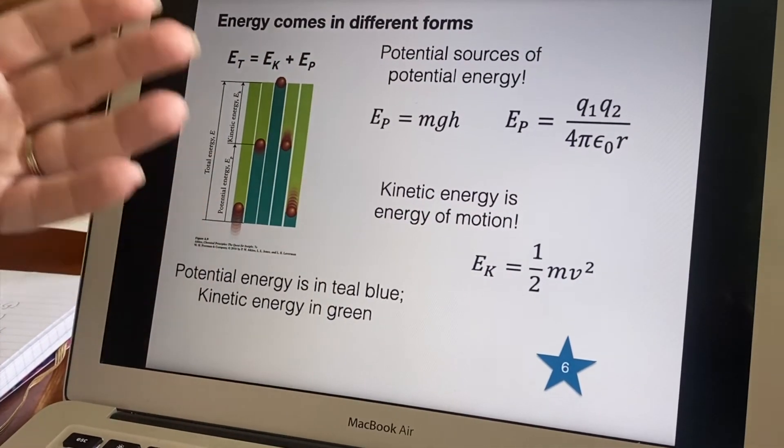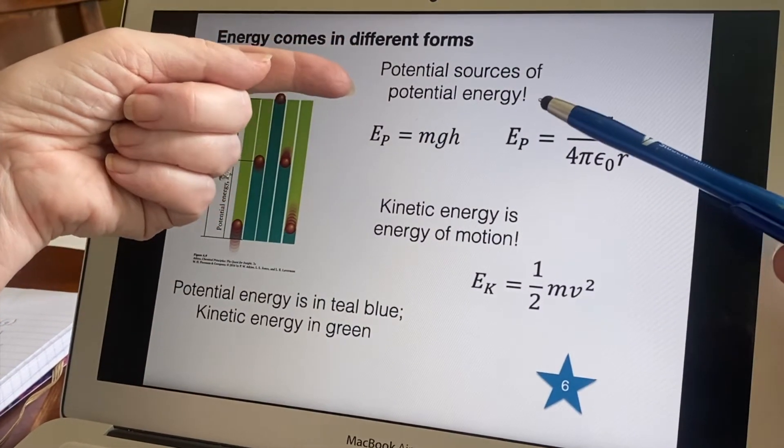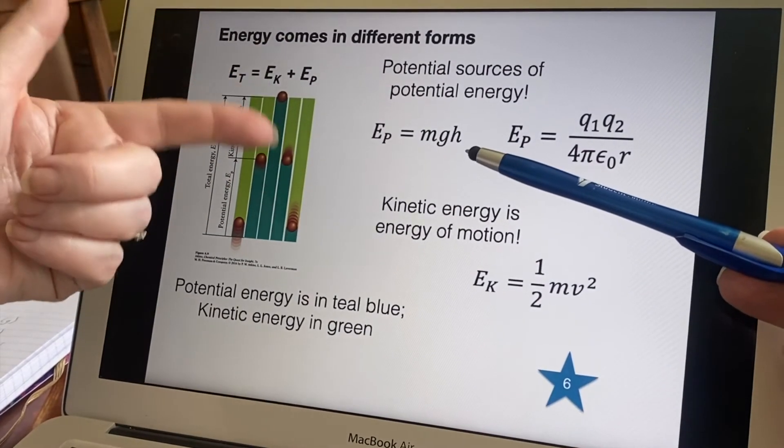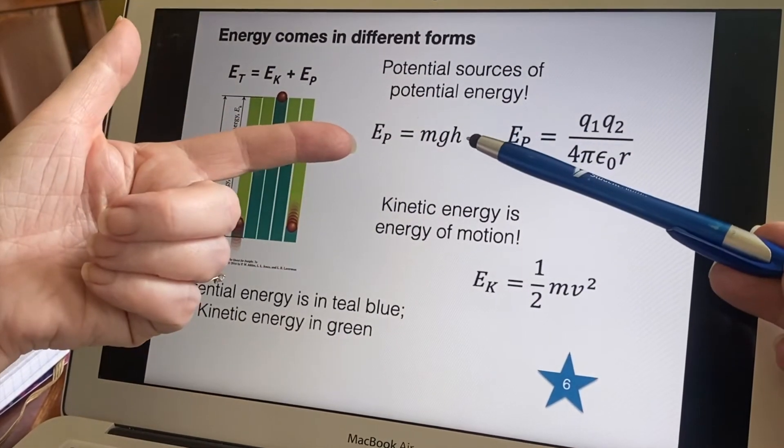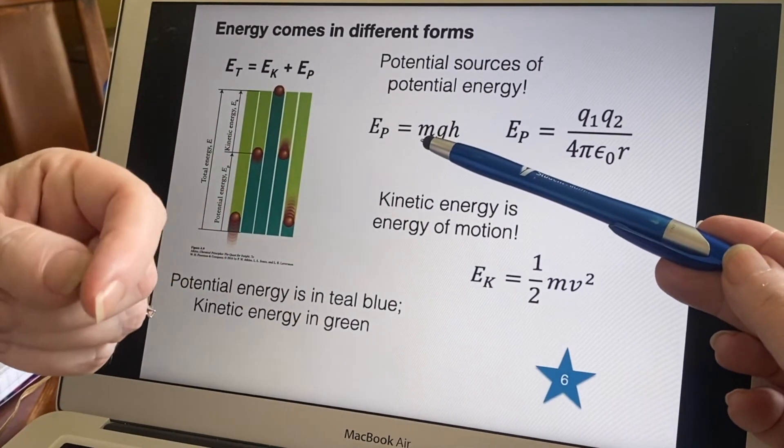Here's my little ha-ha, potential sources of potential energy. The potential energy we were talking about with the ball being thrown up is based on its mass, because if something's heavier it will have more potential energy when it is raised up higher.